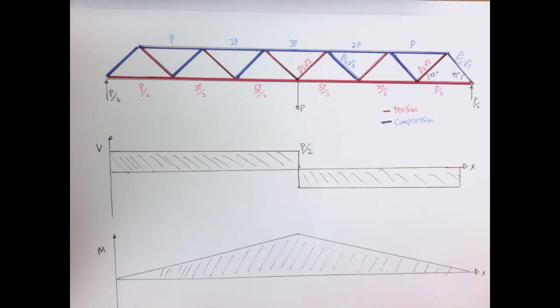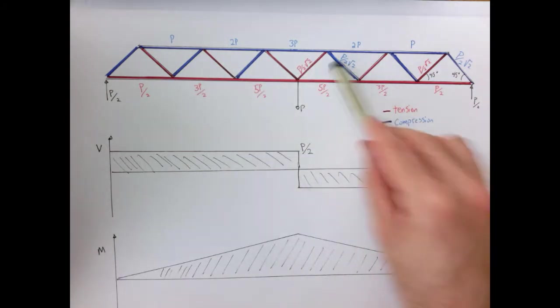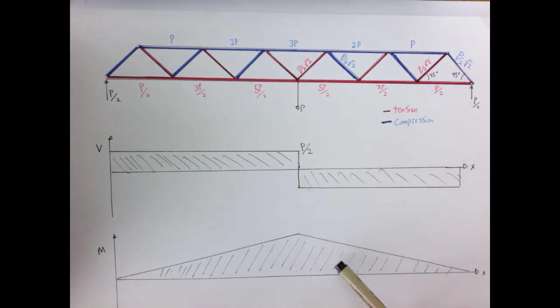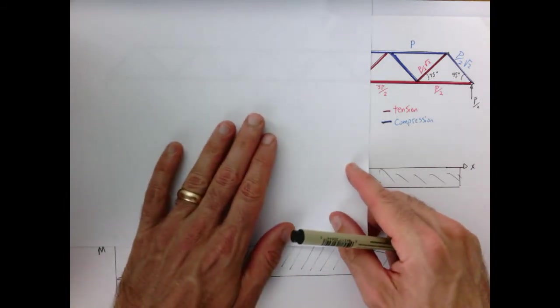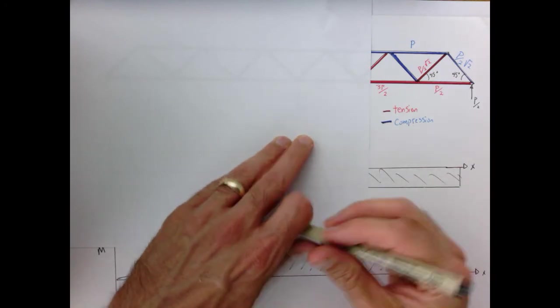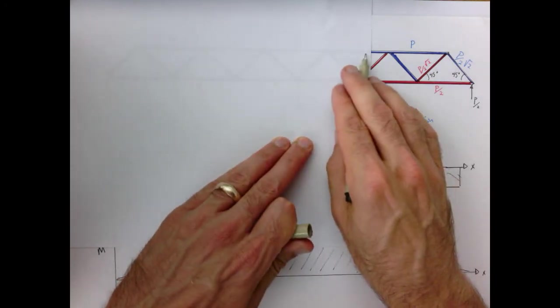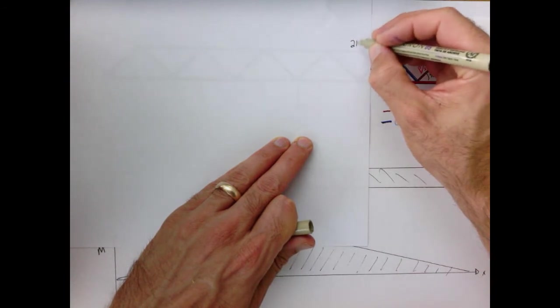So let's see if we can now take some slices of our truss and understand the loadings of these internal members and make the connection to our shear and bending moment diagram. What I'm going to do is imagine that we've sliced our truss. I'm going to imagine that we take a slice here, and what that means is in this member here, it had a load of 2p.